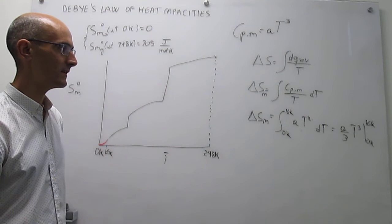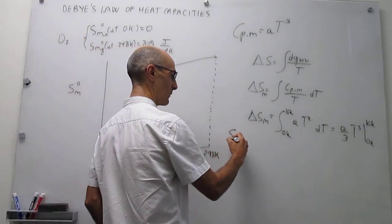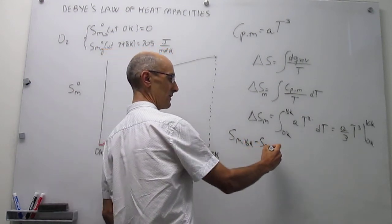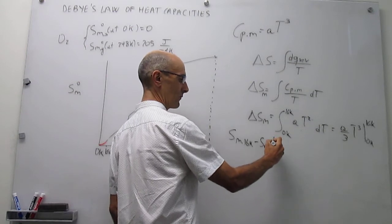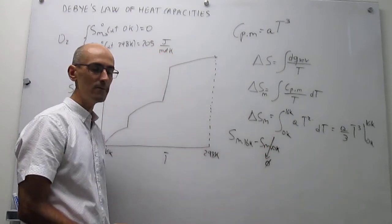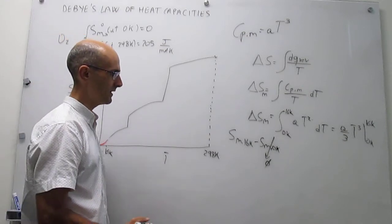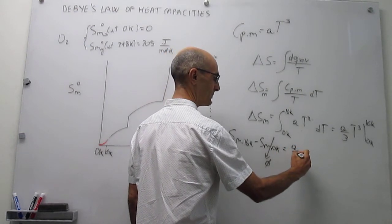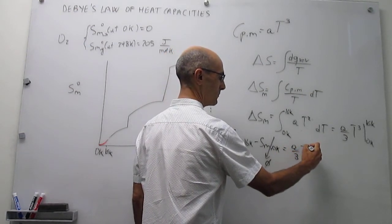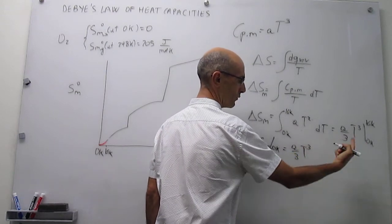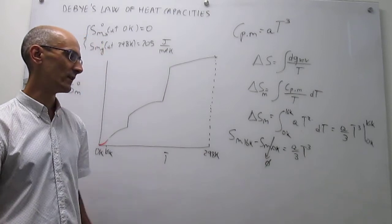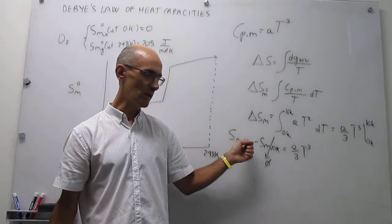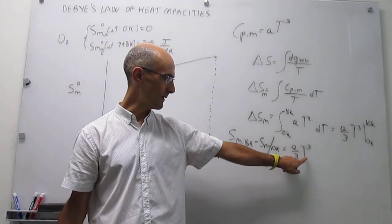So that's what this law is. From there then you can calculate what the entropy would be at 16 Kelvin. Notice that is going to be the entropy at 16 Kelvin minus the molar entropy at 0 Kelvin, but of course the third law tells us that this is zero for a perfectly pure crystalline substance. So this is simply going to be equal to your A thirds T cubed. Notice that when you put here T zero then that will be zero. So that's essentially what you have right here where this T would be whatever temperature you're interested in, 16 Kelvin or maybe 10 Kelvin or 8 Kelvin.